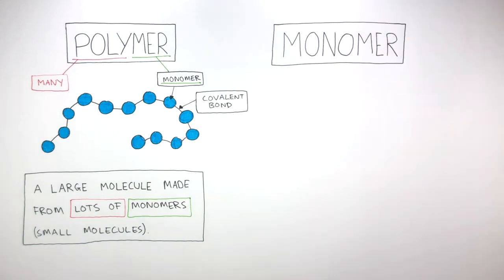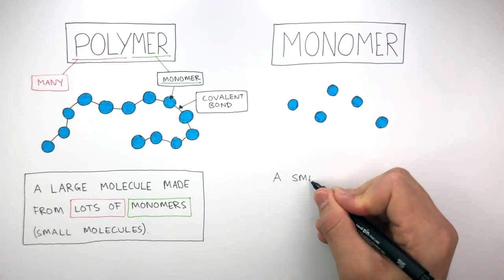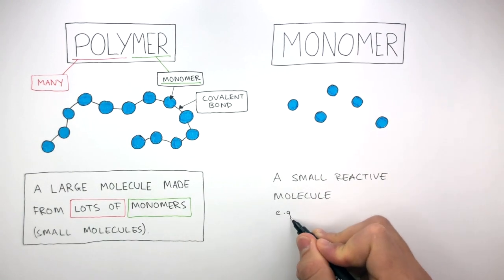We now know a monomer is just a small molecule, represented by these blue circles. And the monomer is just a small reactive molecule. For example, ethene.